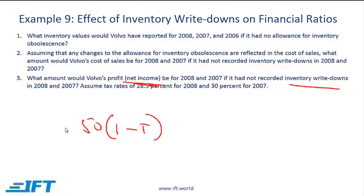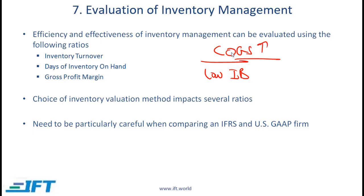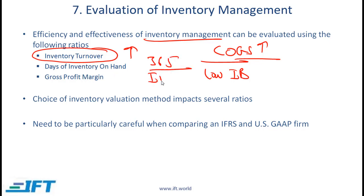Evaluation of inventory management: how well is management taking care of inventory? Generally, you want a company to maintain a low inventory balance and high sales — high sales means cost of goods sold is high. This is essentially the inventory turnover ratio. A high inventory turnover ratio implies good inventory management, and days of inventory on hand is simply 365 divided by the inventory turnover ratio — here you want a low number.